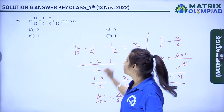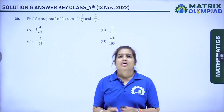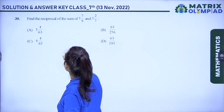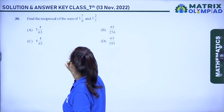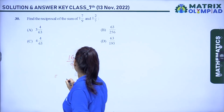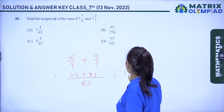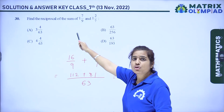Question 30: find the reciprocal of the sum of 1 and 7/9 and 1 and 2/7. Convert to improper fractions: 16/9 + 9/7. Taking LCM of 9 and 7 = 63: (112 + 81)/63 = 193/63. The reciprocal is 63/193. Option D is the correct answer.